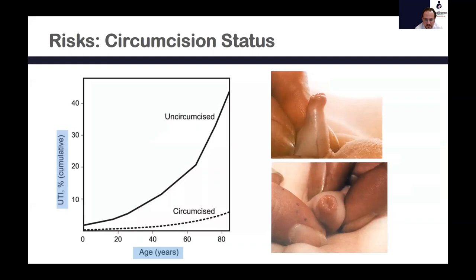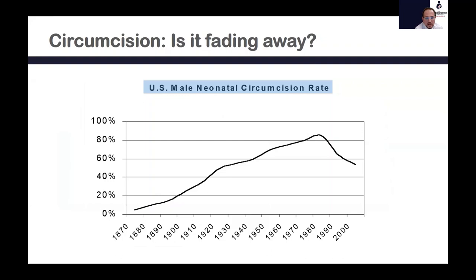One of the main risk factors for urinary tract infection and recurrent UTI is circumcision status. Uncircumcised kids have a higher risk of UTI compared to circumcised kids. In many parts of the world, particularly the Arab world, the majority of kids are circumcised due to religious obligation. However, worldwide there is a fading of neonatal circumcision, with some parents refraining for cultural or personal reasons — and this may increase the risk of UTIs.